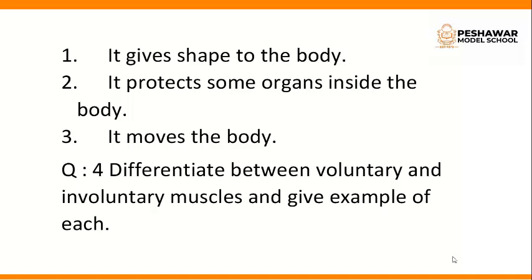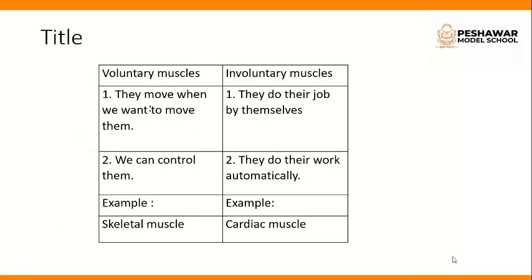Question number 4: differentiate between voluntary and involuntary muscles and give examples of each. Voluntary muscles move when we want to move them. Involuntary muscles do their job by themselves — they do not need our instructions. We can control voluntary muscles, but involuntary muscles do their work automatically.